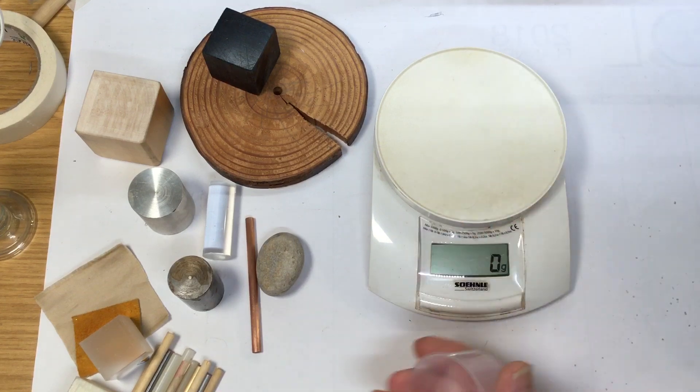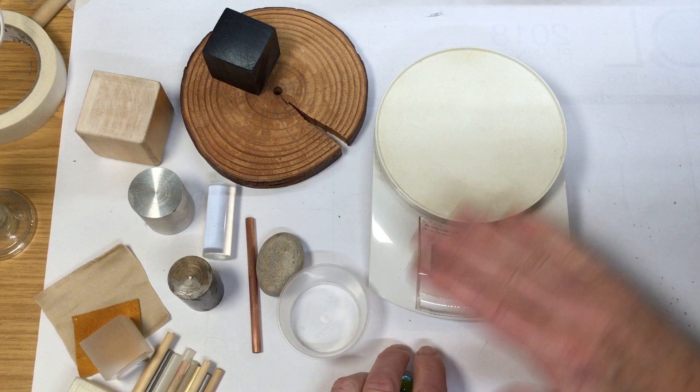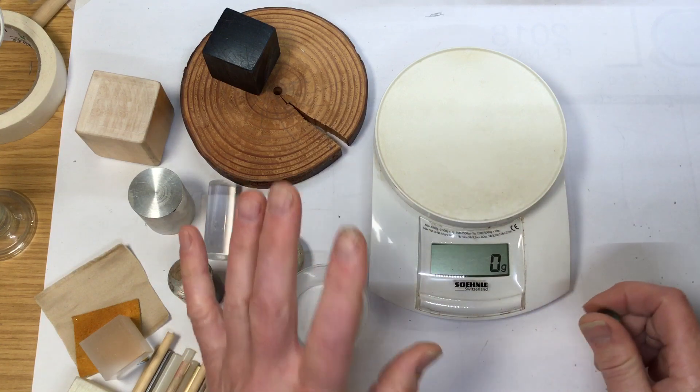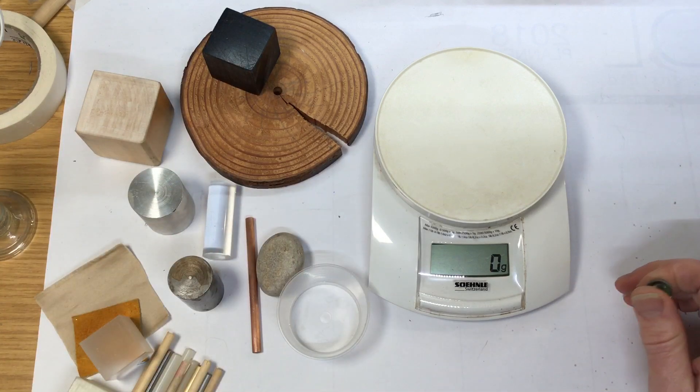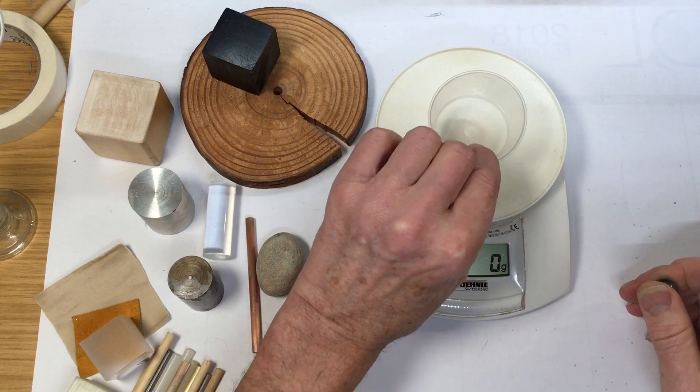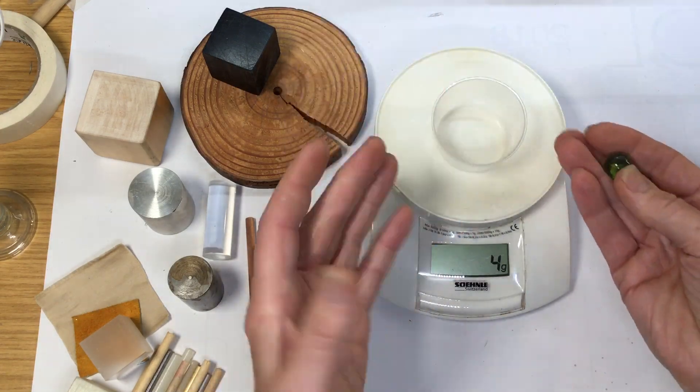So, zero on the scales at the moment. You should always leave them switched on for five minutes, ten minutes, half an hour for more complex scales. Let's put on the little container - remember, powders and liquids you want to put them in a container. Four grams.